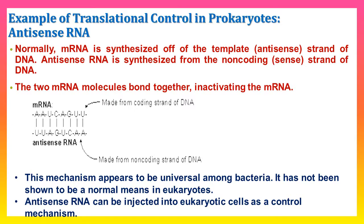Gene regulation can also occur at the translational level in prokaryotes through antisense RNA. Normally, messenger RNA is synthesized from the template antisense strand of DNA. Antisense RNA is synthesized from the non-coding sense strand of DNA. The two messenger molecules bond together, inactivating the mRNA. This mechanism appears to be universal among bacteria, but has not been shown to be a normal mechanism in eukaryotes. Antisense RNA can be injected into eukaryotic cells as a control mechanism for gene regulation.